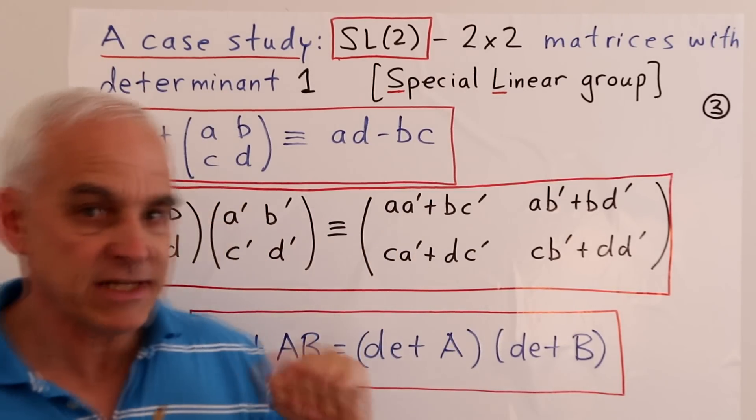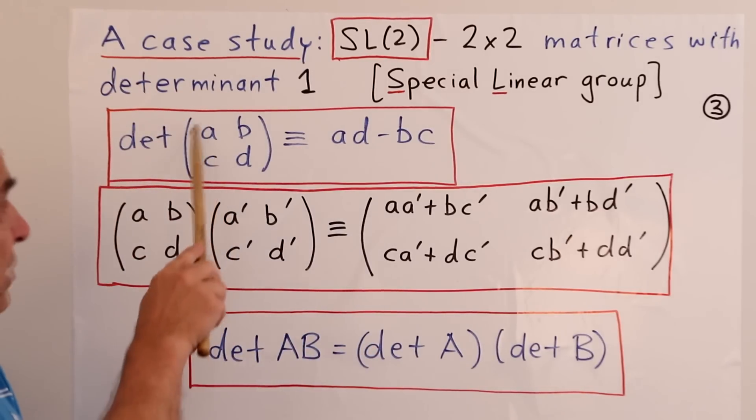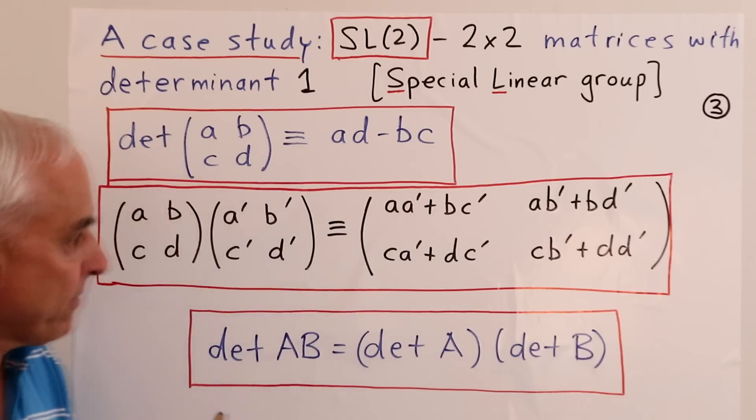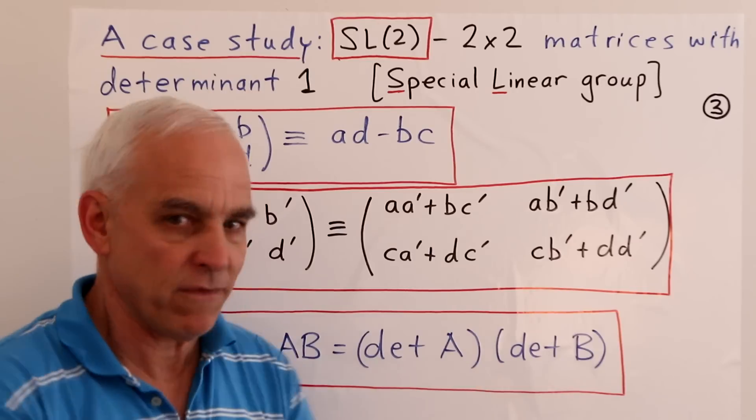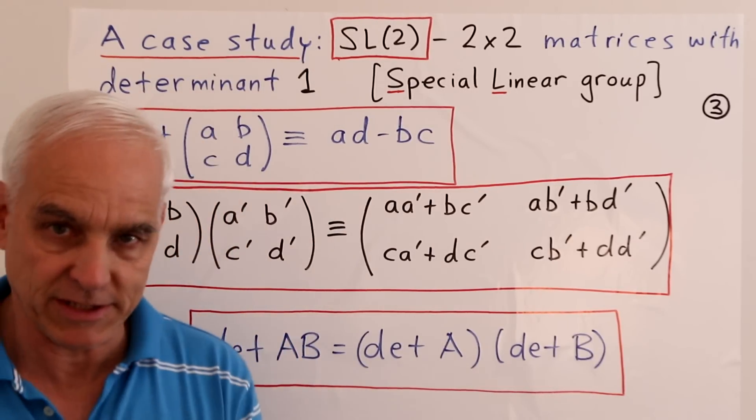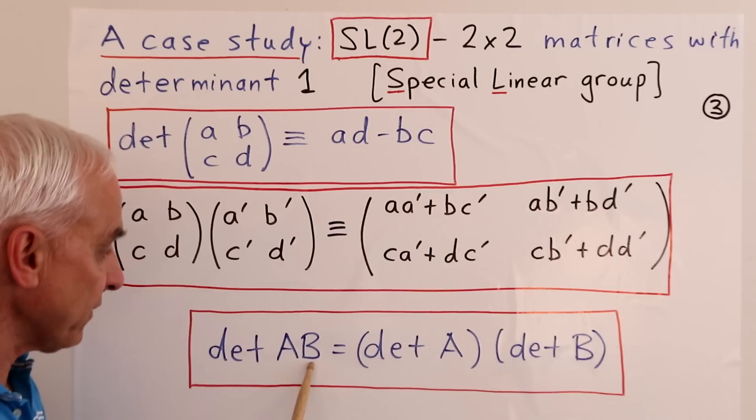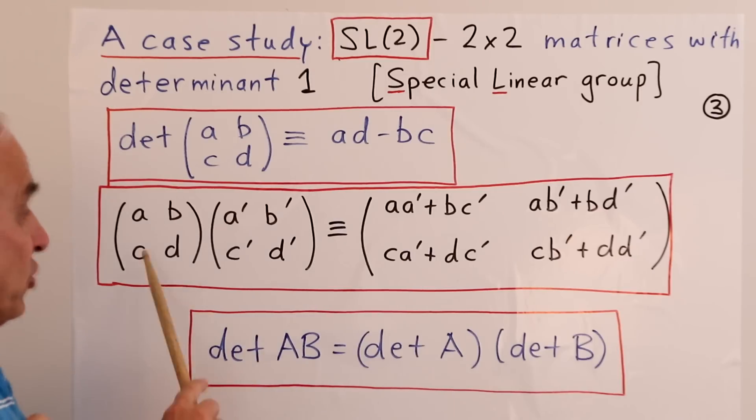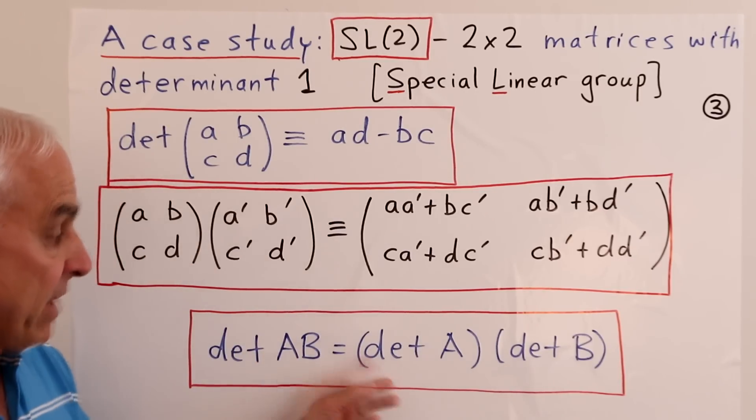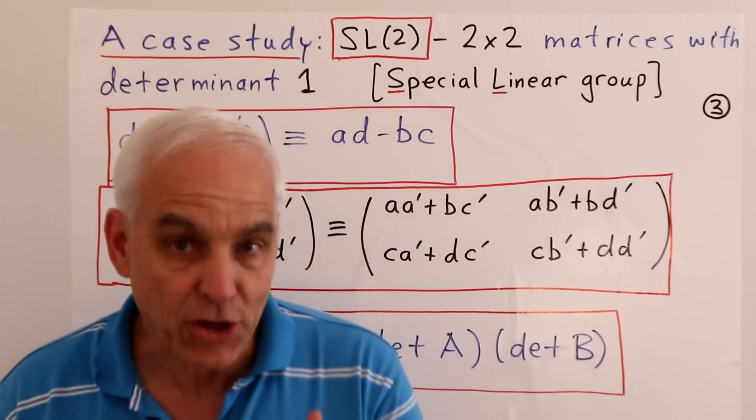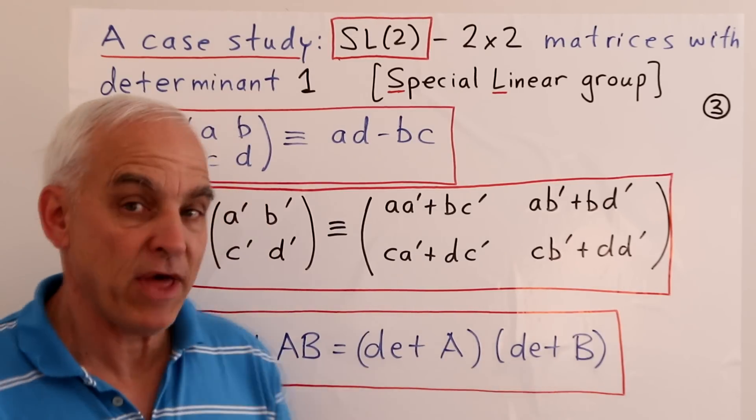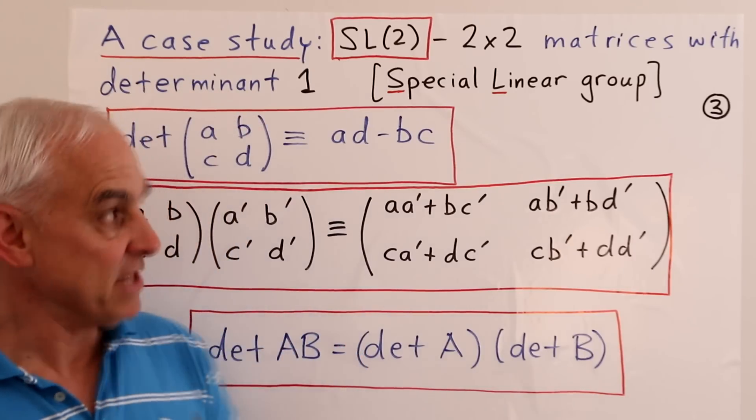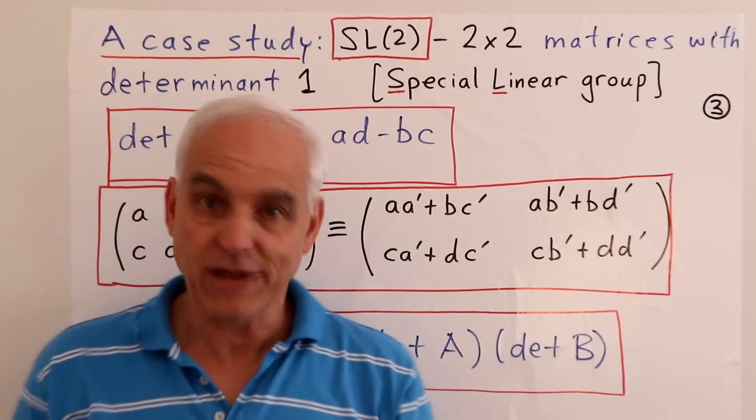So let me remind you of a few basic facts about two by two matrices. First of all, the matrix ABCD has determinant AD minus BC. That's a number associated to a two by two matrix. And here is the familiar product of two matrices. And here is the basic rule about determinants, that if you take the determinant of a product of two matrices, it turns out to be the product of the determinant of A times the determinant of B. So this is the fundamental fact about determinants. In particular, if A and B both have determinant one, then their product is also going to have determinant one. That's the basic property that makes this kind of thing into actually a group.